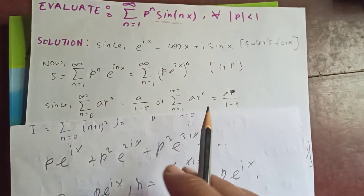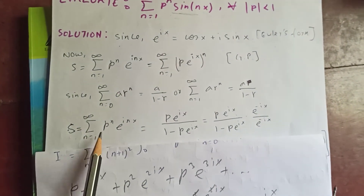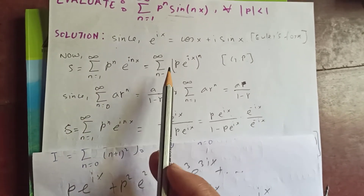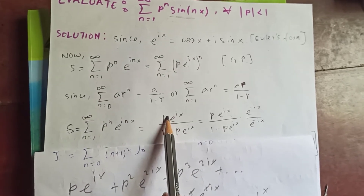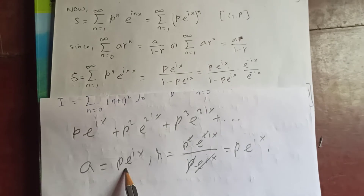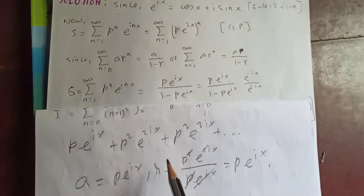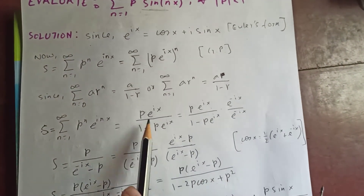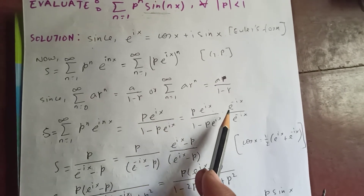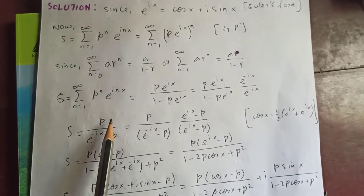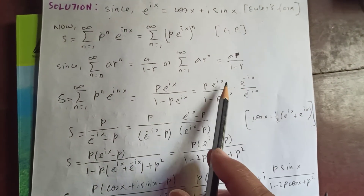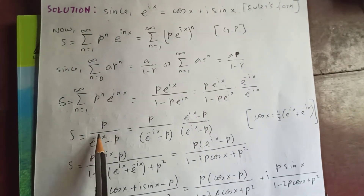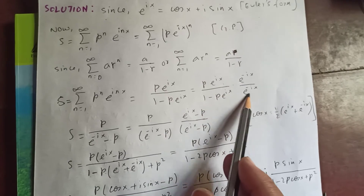So the sum from n=1 to infinity of p^n · e^(inx) equals p·e^(ix) upon (1 − p·e^(ix)). Now multiply both numerator and denominator by e^(−ix). The numerator becomes p·e^(−ix)·e^(ix) = p. The denominator: e^(−ix) minus p·e^(ix)·e^(−ix) = e^(−ix) minus p.